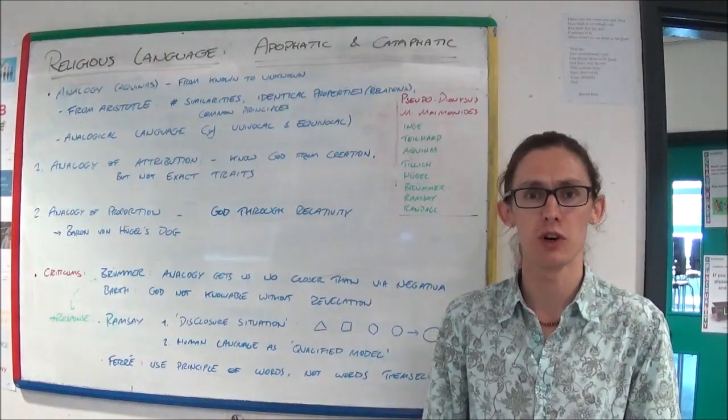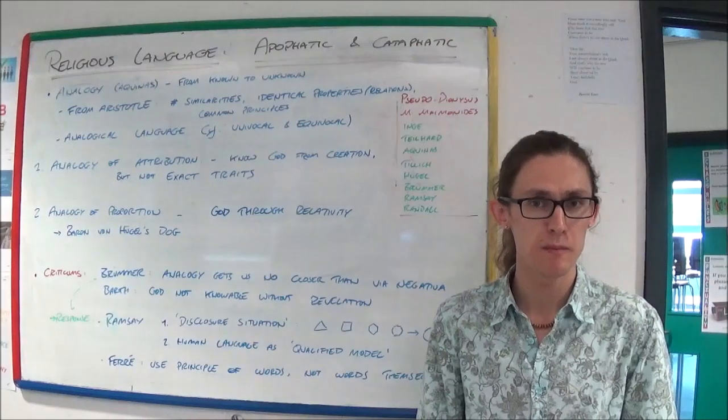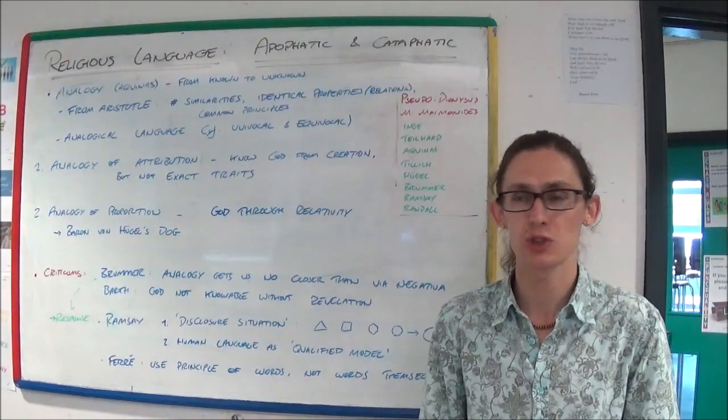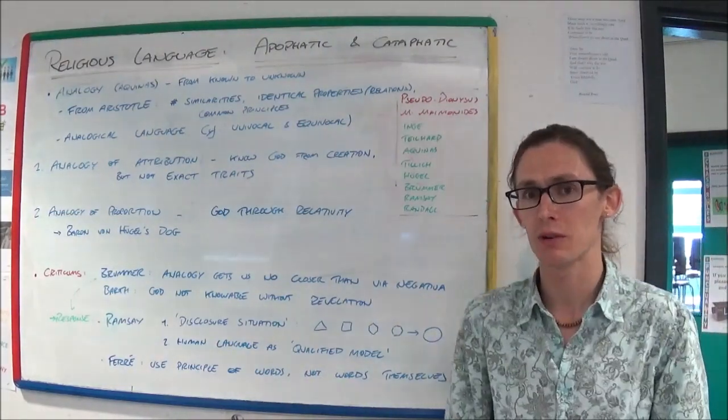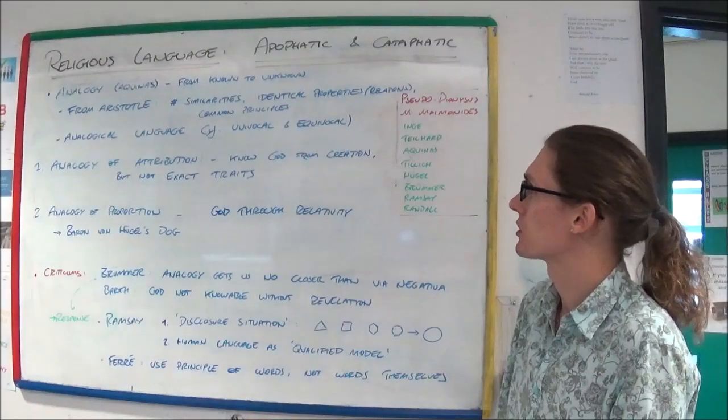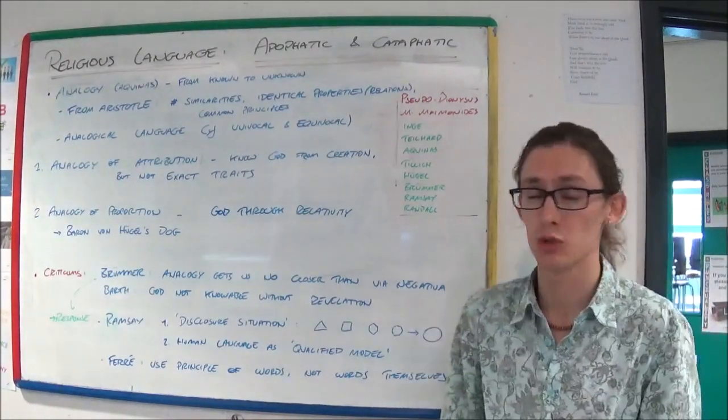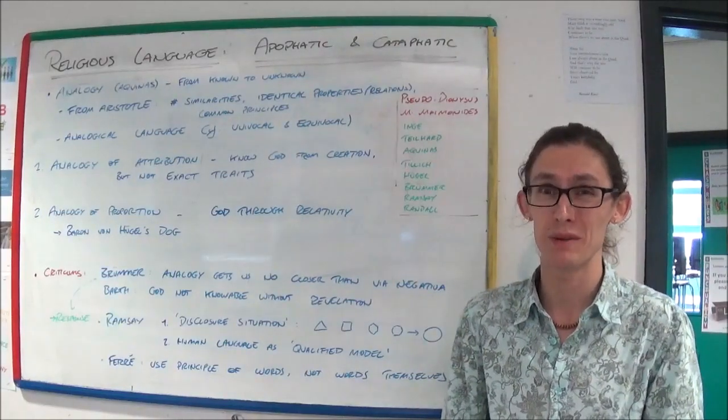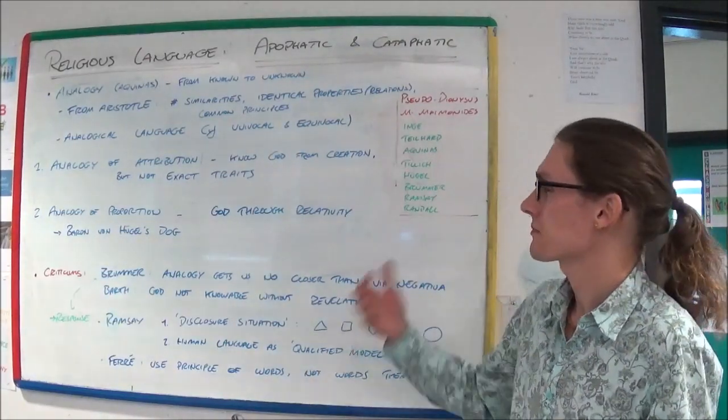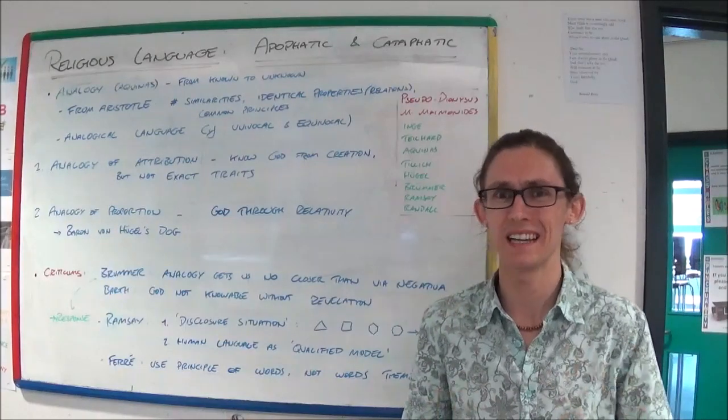So for example, if I were to suggest that a dog is like a spade, we're struggling here. How many similarities are there between a dog and a spade? How many identical properties or relationships? Not many. Maybe they can both dig. And how many common principles? Again, not many.